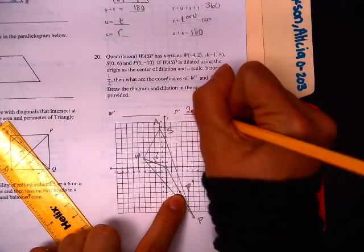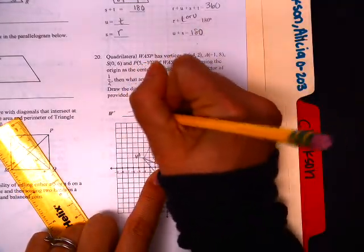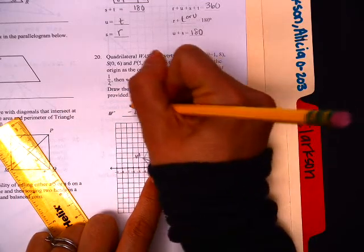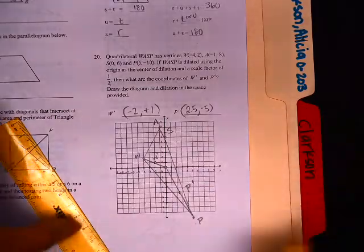So, this would be our P prime. So, let's see. What did we say? That was 2.5 over, but down 5. And that was over 2 and up 1. So, kind of just treat them like the normal dilations that we've done.